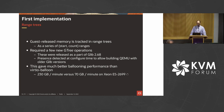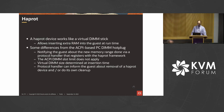For performance, guest-released memory is tracked in range trees — essentially an extent tree as in file systems. This required a few new GLib operations to be added to GLib, which have already been upstreamed and released as part of GLib 2.68 about a year and a half ago. The driver detects their presence so as not to break QEMU builds with other GLib versions.